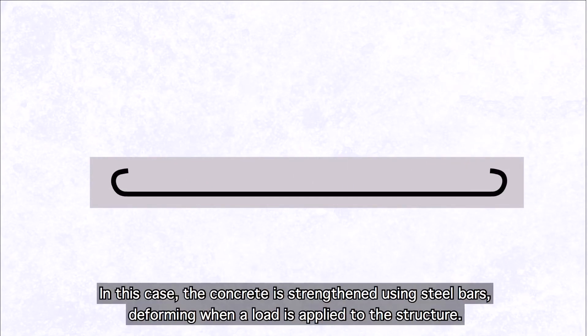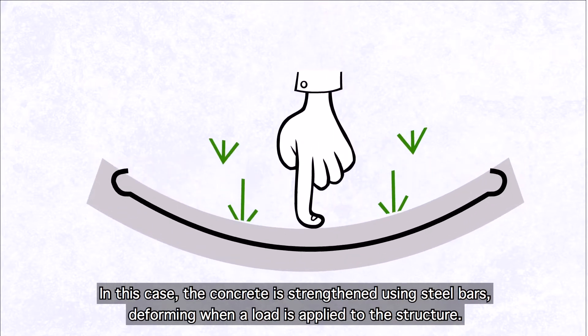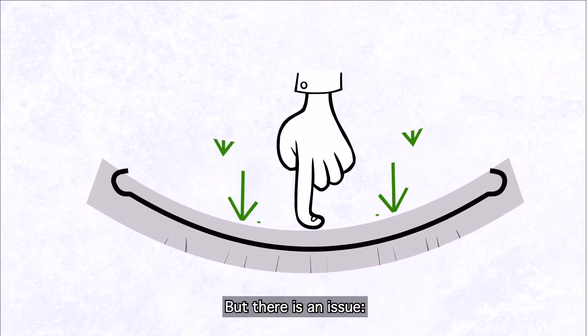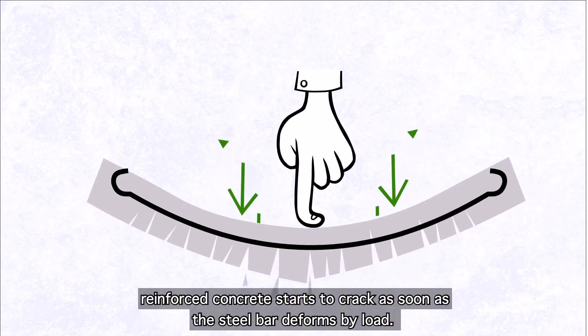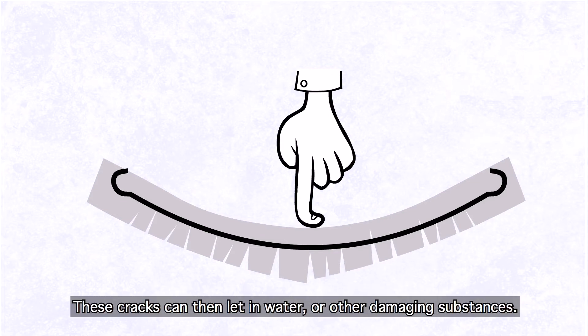At that time, reinforced concrete was already in use. In this case, the concrete is strengthened using steel bars, deforming when a load is applied to the structure. But there is an issue. Reinforced concrete starts to crack as soon as the steel bar deforms by load. These cracks can then let in water or other damaging substances.